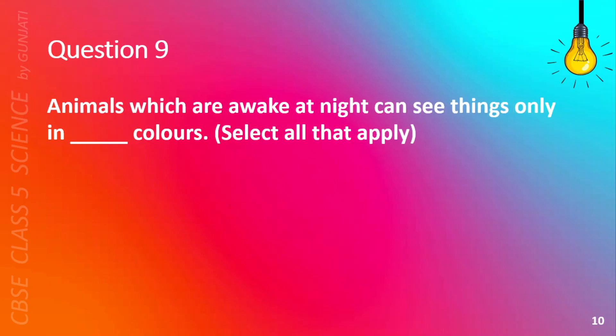Question 9. Animals which are awake at night can see things only in blank colors. Select all that apply. A. Black, B. Green, C. Red, or D. White.